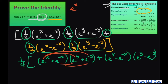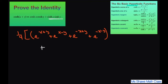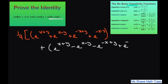Now we multiply using the distributive property or FOIL. When you multiply e to the x times e to the y, that's e to the x plus y. Expanding both products gives us one fourth times: e to the x plus y, plus e to the x minus y, plus e to the negative x plus y, plus e to the negative x minus y, plus e to the x plus y, minus e to the x minus y, minus e to the negative x plus y, plus e to the negative x minus y.